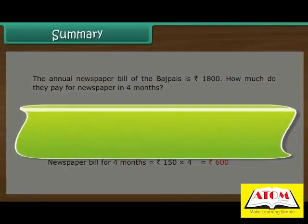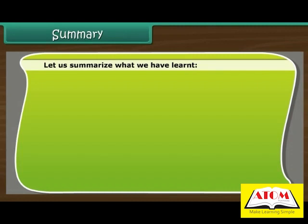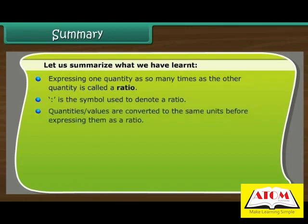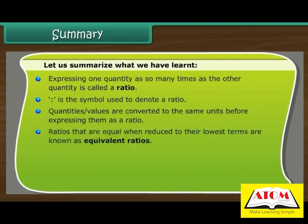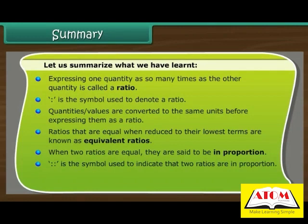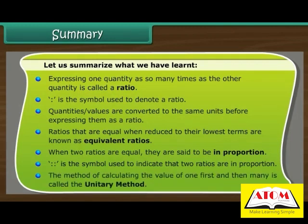Summary: Expressing one quantity as so many times the other quantity is called a ratio. Colon is the symbol used to denote a ratio. Quantities and values are converted to the same units before expressing them as a ratio. Ratios that are equal when reduced to their lowest terms are known as equivalent ratios. When two ratios are equal, they are said to be in proportion. The method of calculating the value of 1 first and then many is called the unitary method.